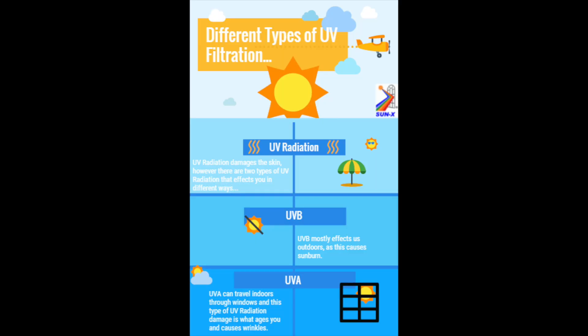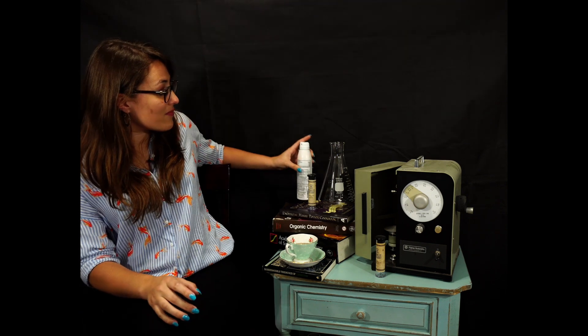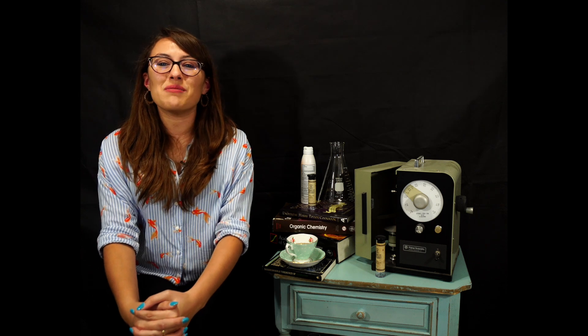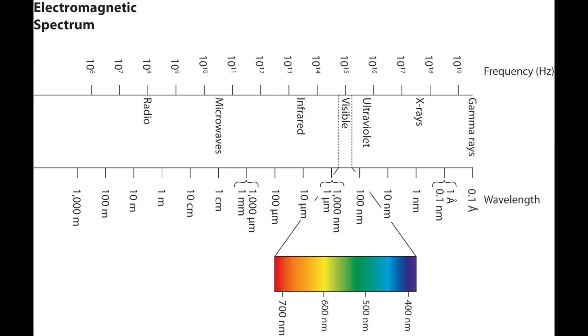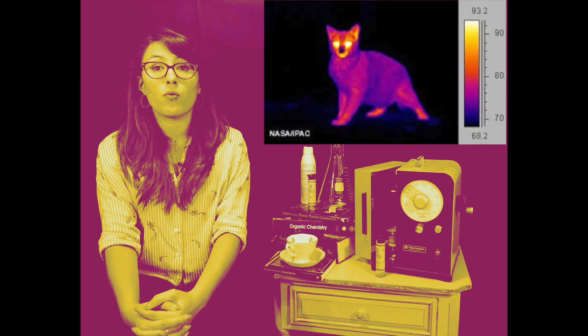Most of us know ultraviolet radiation as a component of sunlight that causes sun tans, however most of us know it more in the sense of causing sunburn, so it is probably very important for you to apply that sunblock prior to going out into the sun, especially on a cloudy day. Visible light is the only section that the human eye can actually visualize. The next part of the spectrum is infrared, which is the radiation that is emitted from a hot or warm object.